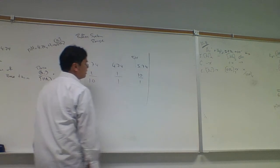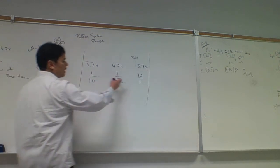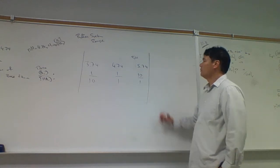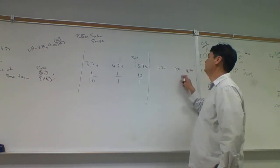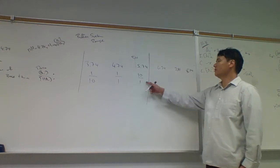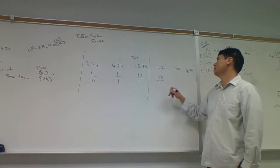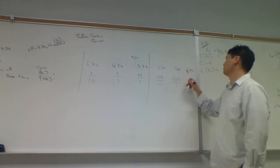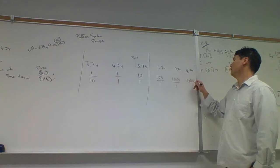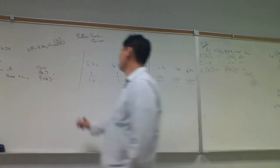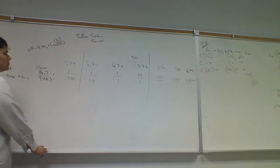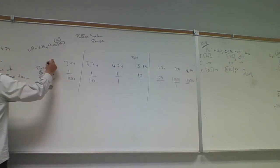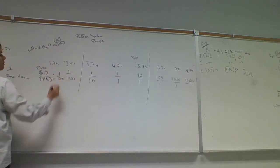Can we continue to add more base to get to 6.74 or 7.74? To get to 6.74 we need a 100-to-1 ratio. To get to 7.74 we need 1,000-to-1. To get to 8.74 we need 10,000 parts of base to every one part of acid. Going the other direction, to get down to 2.74 we need 1-to-100, meaning 100 times more acid than base. If we go to 1.74, we need 1,000 parts of acid for every one part of base.